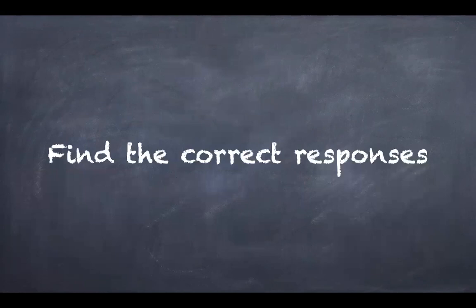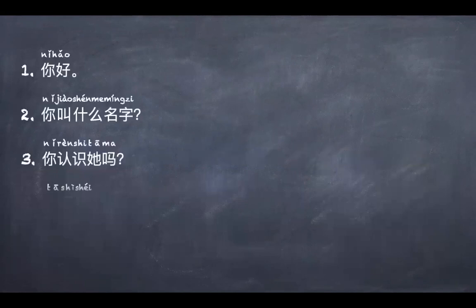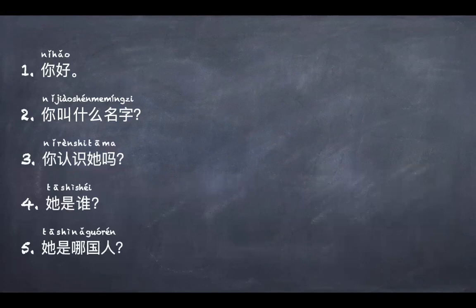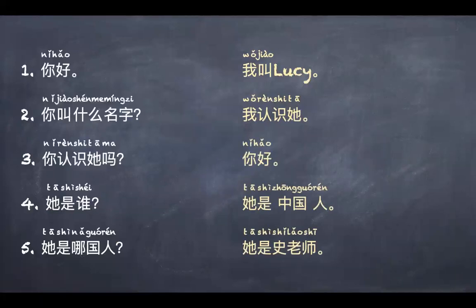We have learned quite a few conversations till now, so now let's try to find the correct responses to their questions. The left column are some sentences or questions. The right column are their answers or responses, but they're not in the right order. Now you can pause the video and work out the correct response to each conversation.